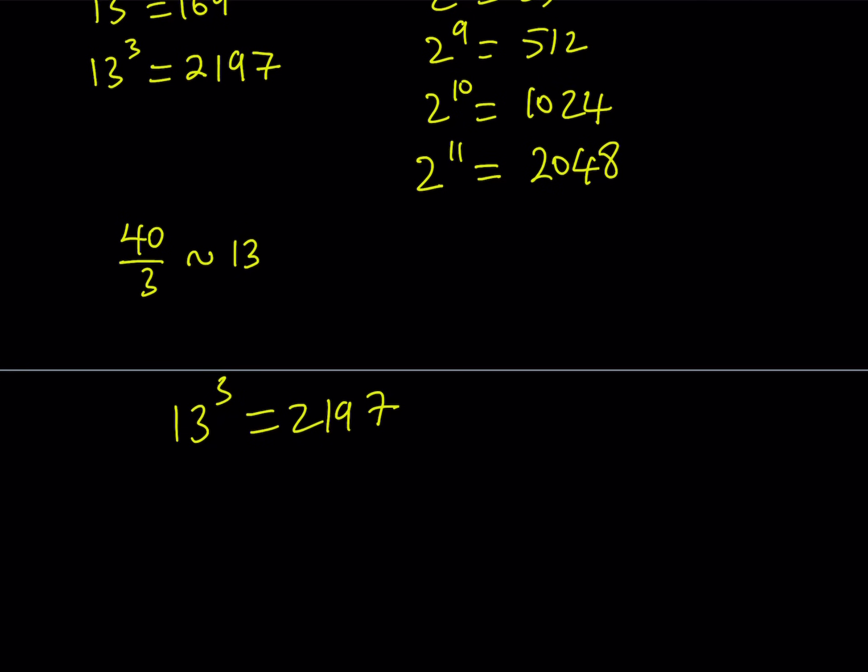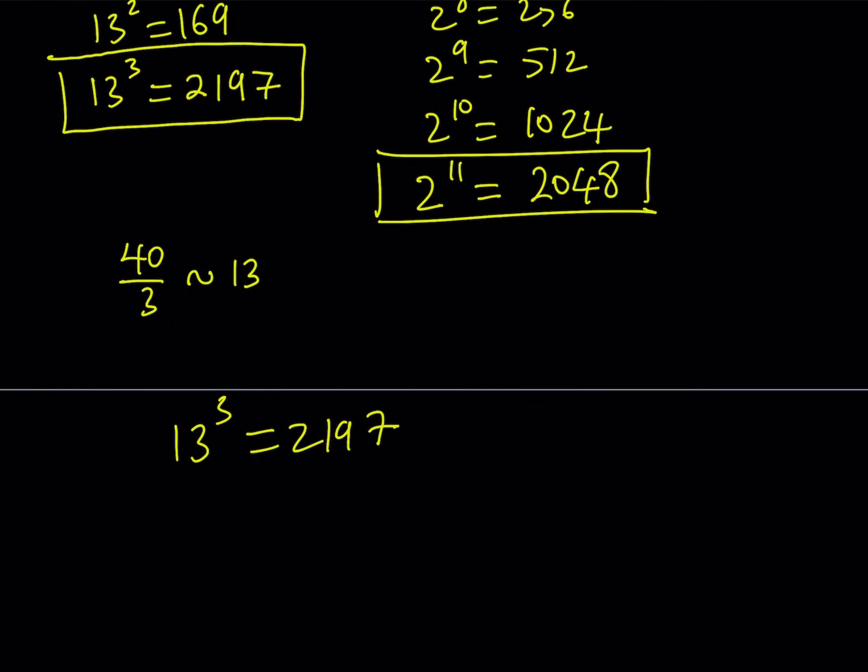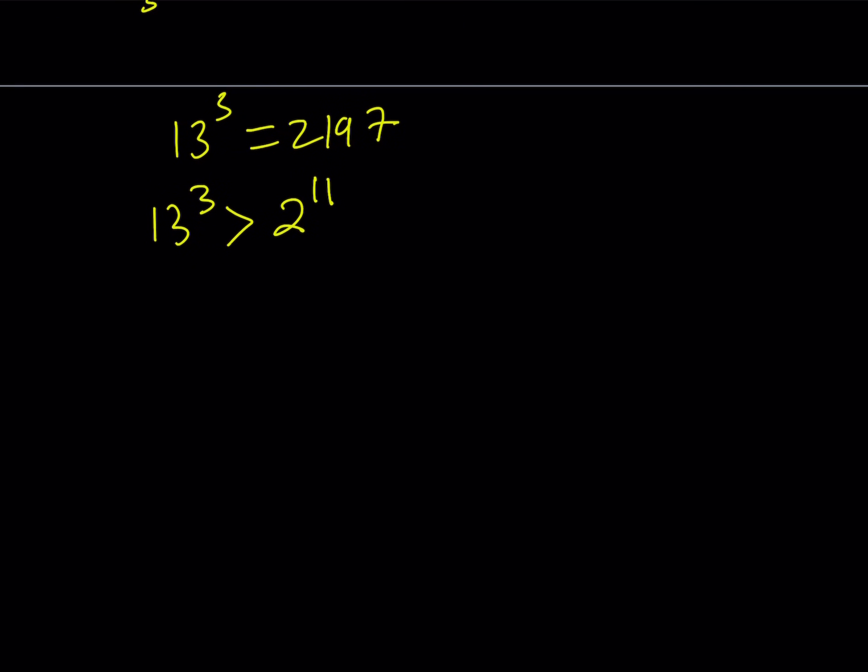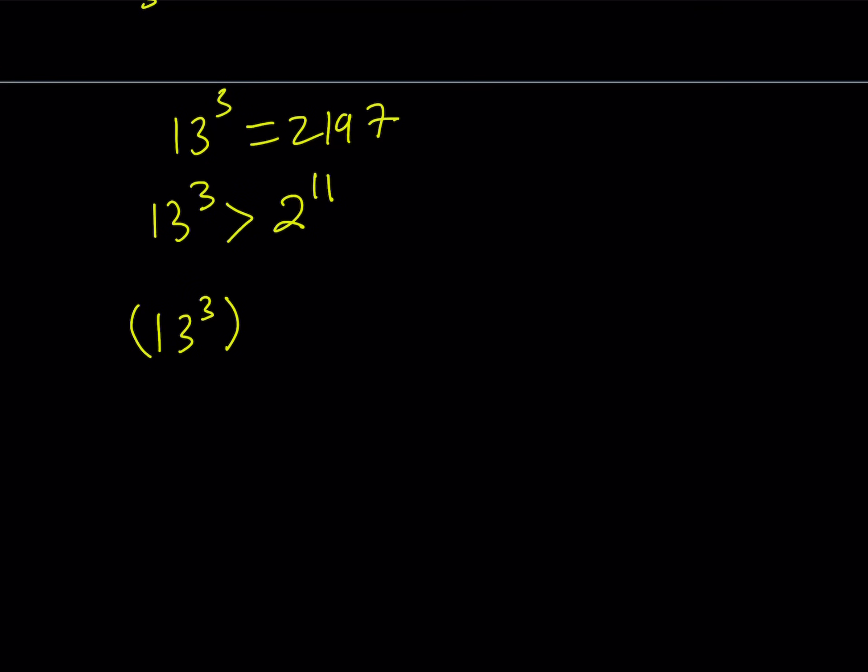But first of all, before we do that, notice that this number is larger than that number. So I can safely say that 13 to the power 3 is greater than 2 to the power 11. Since my goal is to reach 13 to the power 40, and 40 divided by 3 is 13 approximately, let's raise both sides to the power 13. And we're going to do it on both sides so that the inequality is preserved because the bases are greater than 1. So it works.